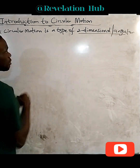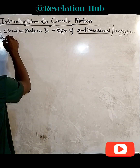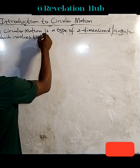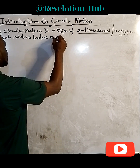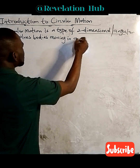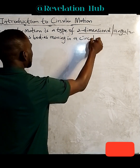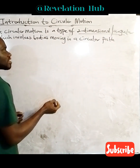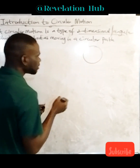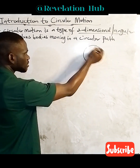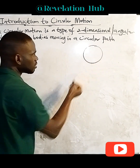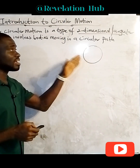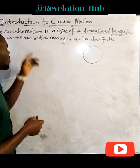So it's a type of two-dimensional motion which involves bodies moving in a circular path. Now we all know what a circle is — this is what a circle is. So when we have bodies moving in a circular path, either about an axis, when we have a body moving in a circular path, we say that body is undergoing what we call circular motion.